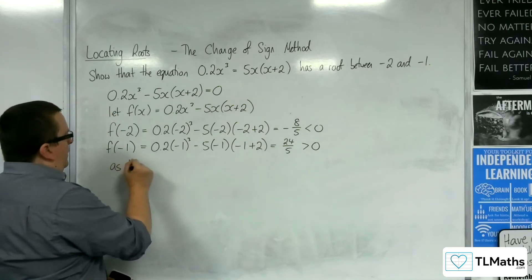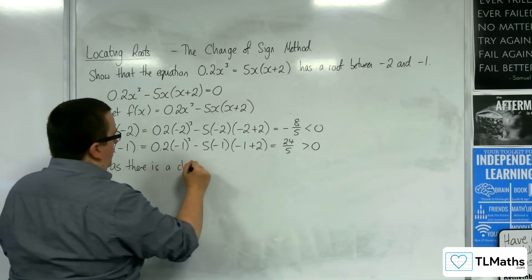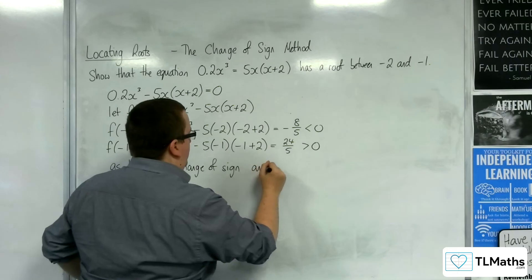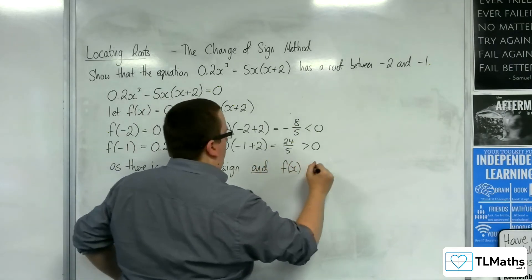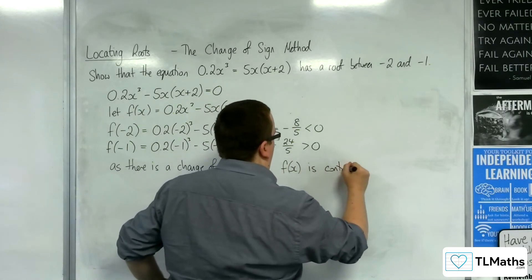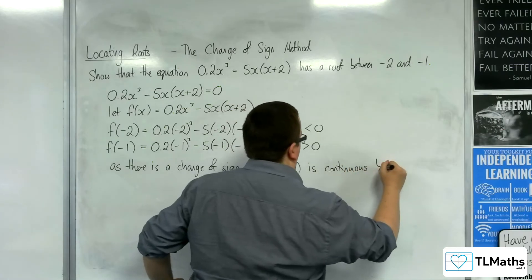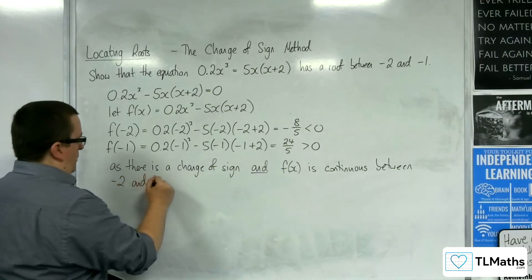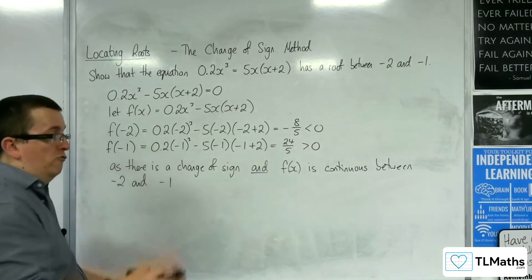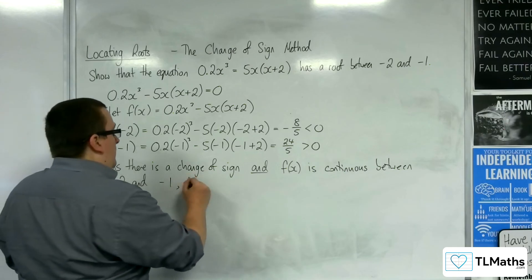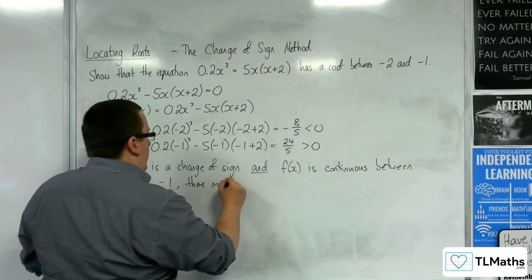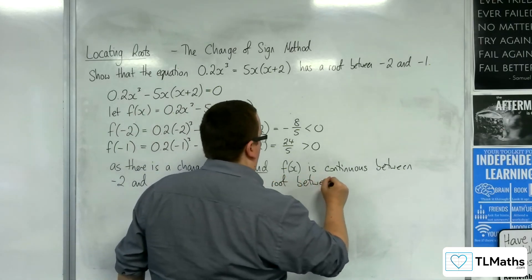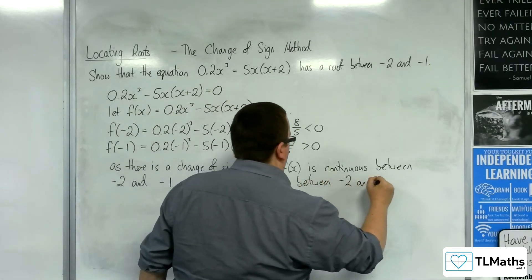So, as there is a change of sign, and f(x) is continuous between -2 and -1, in fact it's continuous for all real values of x, there must be a root between -2 and -1.